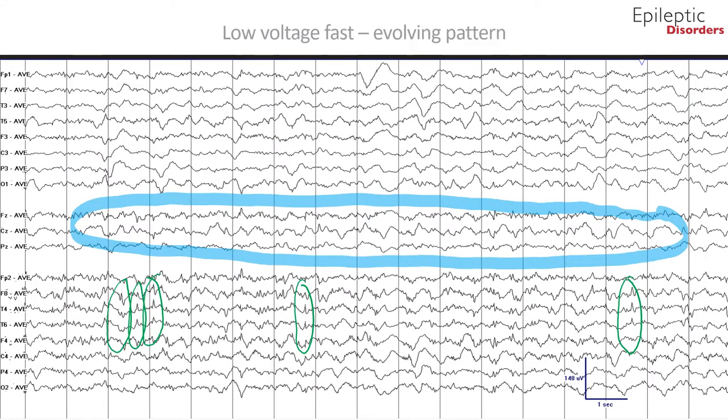The same page shown in average montage: you can see sharp waves where the previously well-defined phase reversals were, with some examples outlined in green. Furthermore, there is further evolution of the seizure with delta slowing noted towards the end of the page, and the field evolves with spatiotemporal spread to the central midline channel CZ, as noted by the higher-amplitude delta slowing.